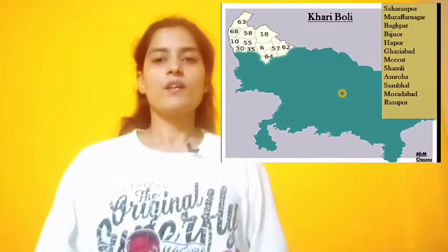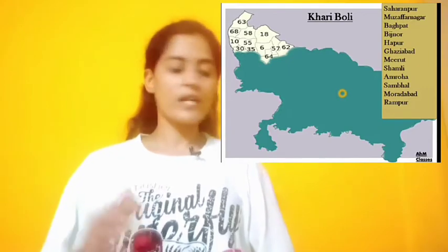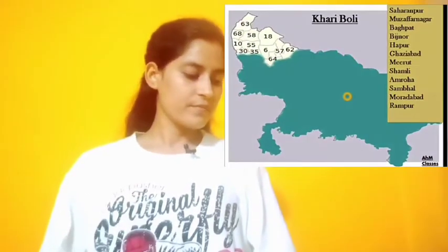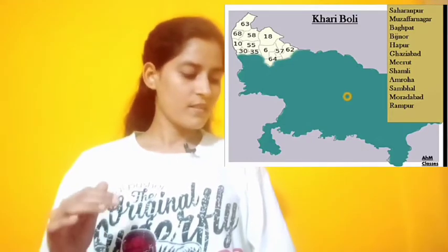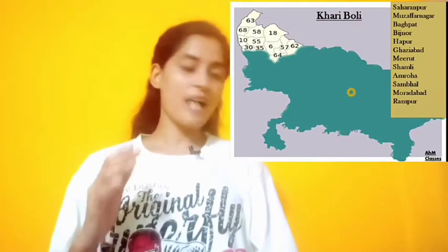Toh hum batayenge ki yeh jo saat boliyan hain, kaun kaun se jagah boli jaati hain. Muzaffarnagar mein, Baghpat mein, Bijnore mein, Hapur mein, Ghaziabad, Meerut, Shamli, Sambhal, Moradabad, Rampur — is tarah se jo abhi aapko bataye gaye yeh jagahon ka naam, aise jagahon mein Khaari Boli boli jaati hai.